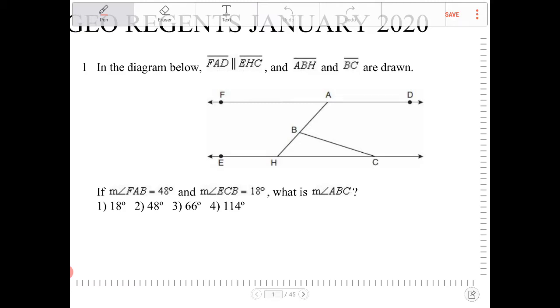FAB is equal to 48 degrees, so that's this guy right there. And ECB is 18 degrees.